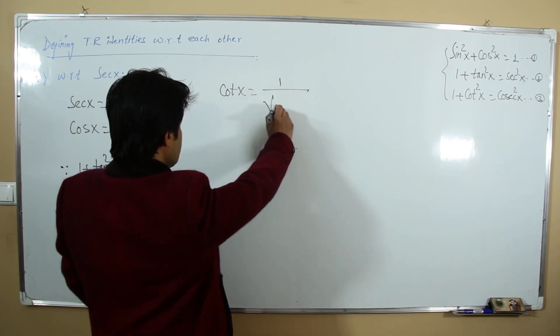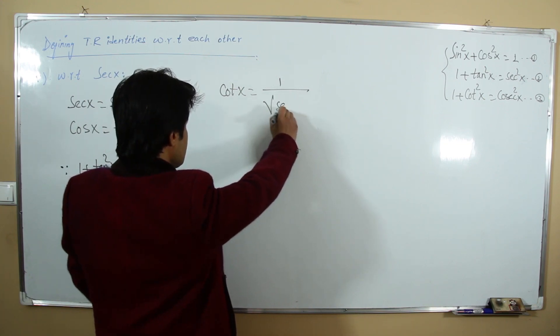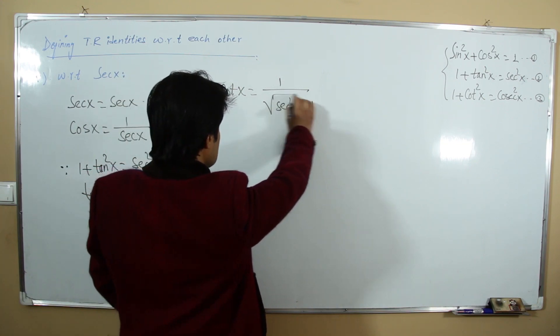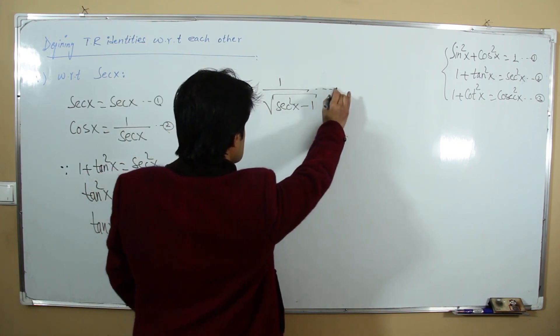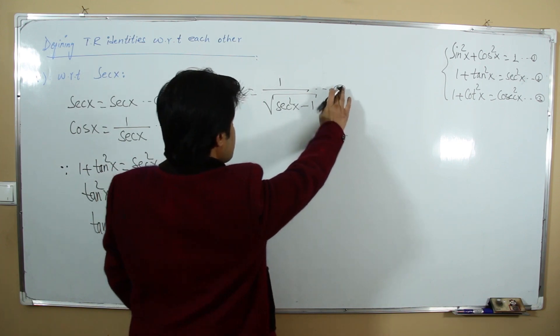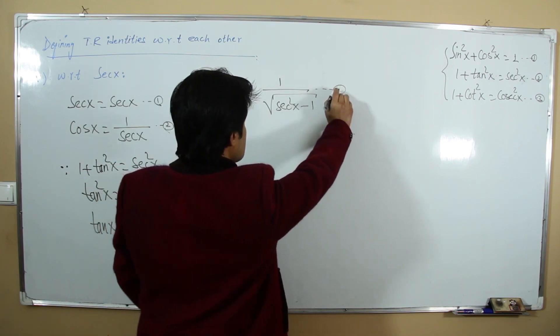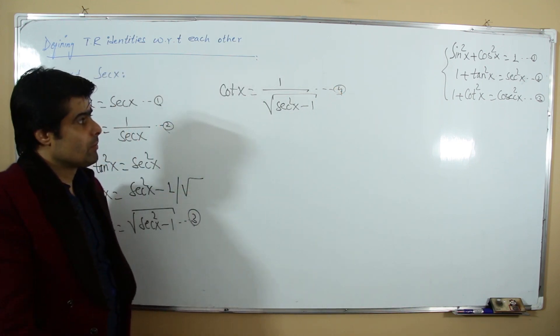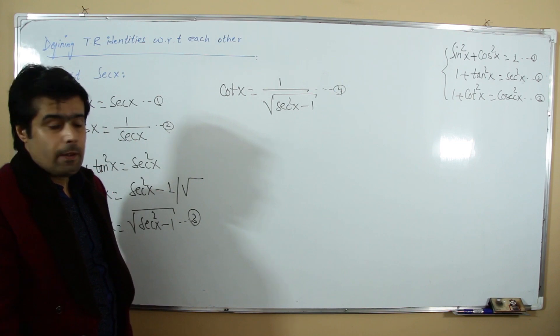Cotangent is the reciprocal of tangent: cot x = 1/√(sec²x - 1). This is our fourth relation.